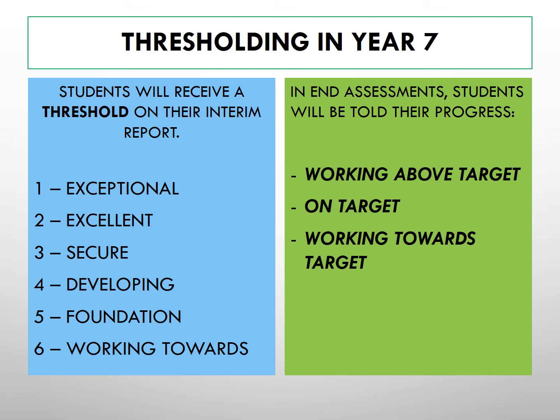In the autumn term, Year 7 students will undertake an initial assessment that will decide what their threshold is for the rest of the year. This will appear on their interim report. Students are deemed either exceptional, excellent, secure, developing, foundation, or working towards. From then on, their end assessments will be considered working above target, on target, or working towards target depending on their initial threshold.